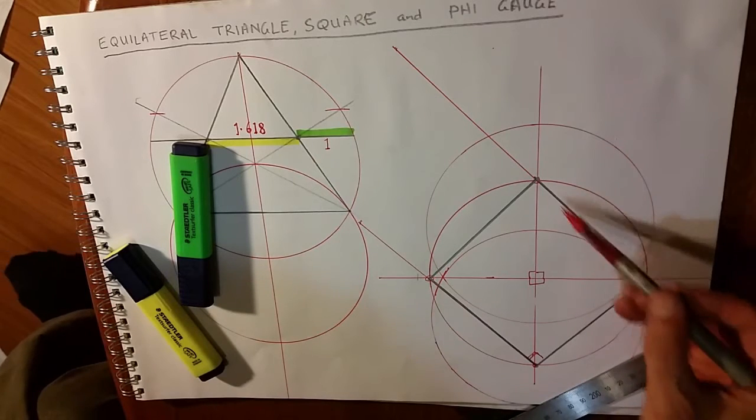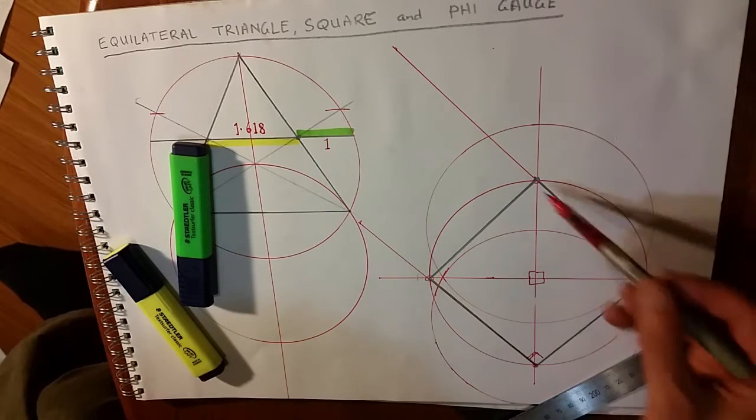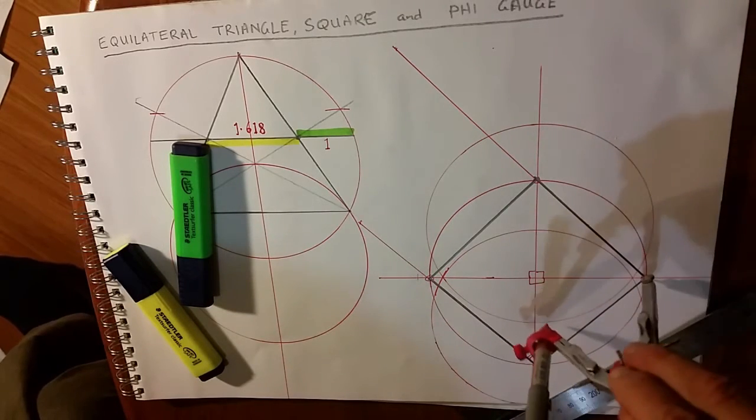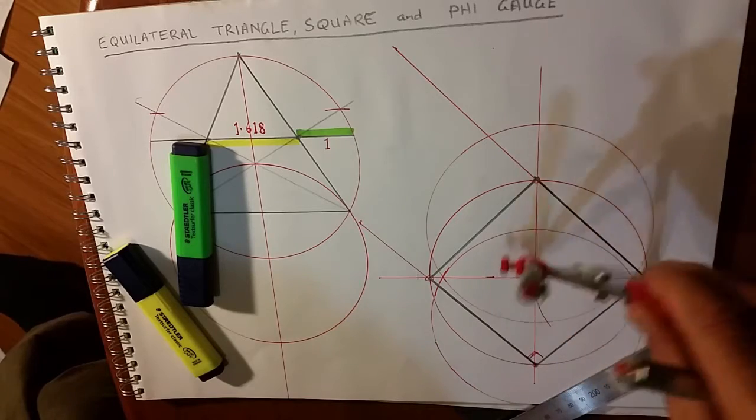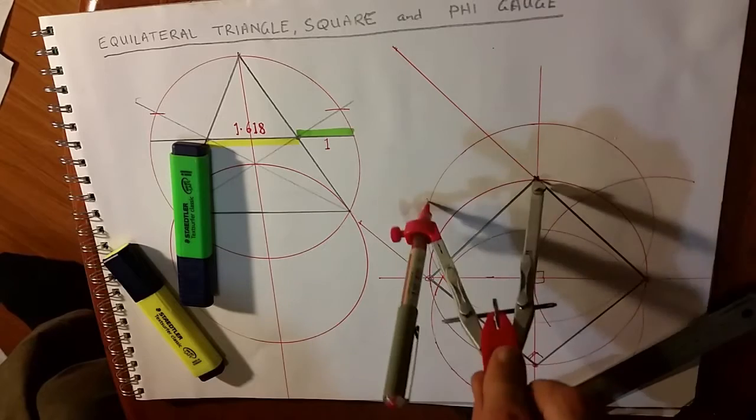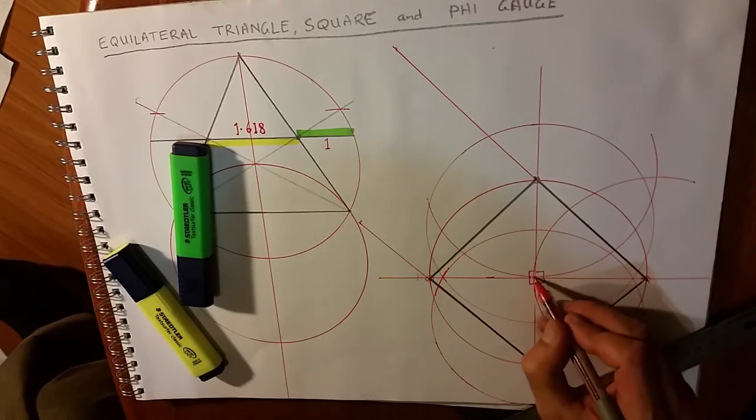Now what we need to do is bisect between these two points. And without changing the compass, I'm going to create an arc. And an arc. And an arc.